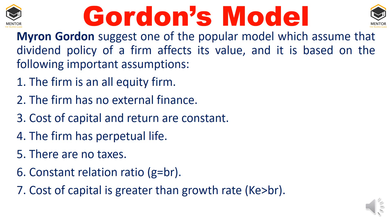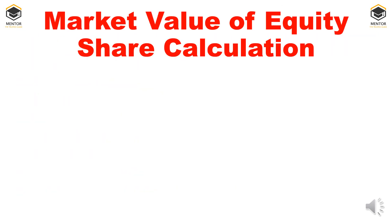Further assumptions: there are no taxes, which is practically not possible but assumed here. There is a constant retention ratio; growth g equals b times r, where b is the retention ratio and r is the rate of return. According to this model, the cost of capital ke is greater than the growth rate br.